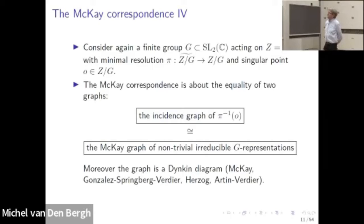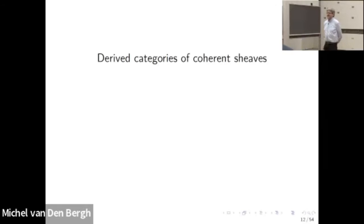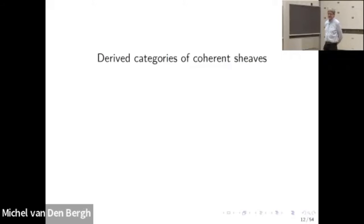The McKay correspondence is kind of nice but it also looks a bit ad hoc. I want to discuss a much more general result by Caprano and Vasuro that first of all implies the classical McKay correspondence, but also shows how one should try to generalize it. For this I need to discuss the derived categorical framework — Sasha already did this beautifully in his last talk, so there will be some duplication.